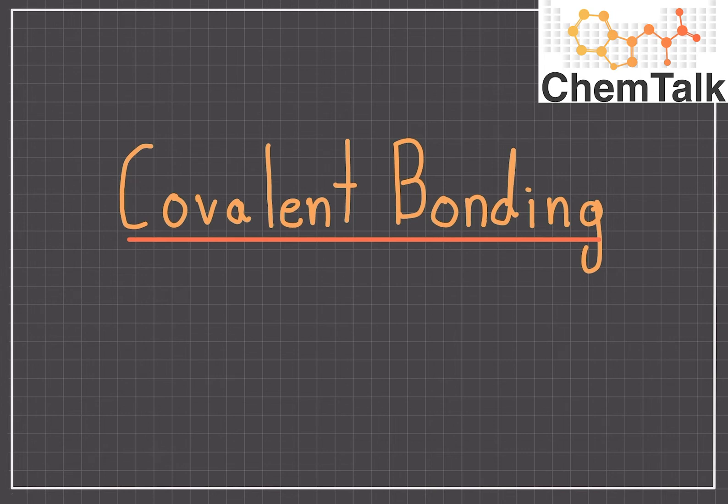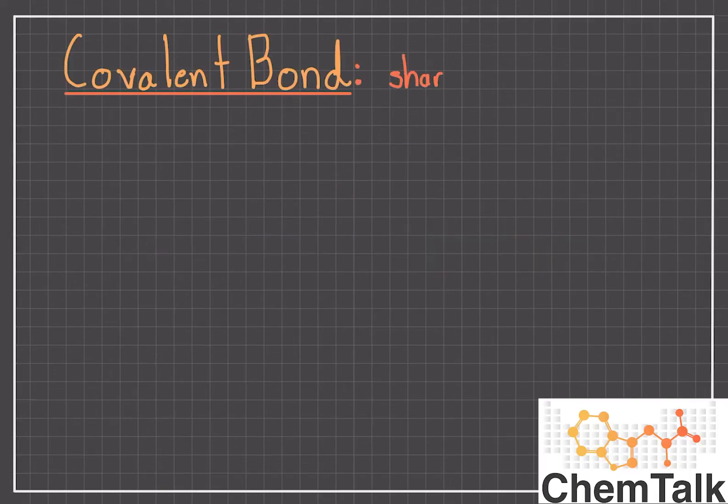You may find the video on ionic bonding on the ChemTalk YouTube channel. Covalent bonding is defined as the sharing of electrons between atoms.